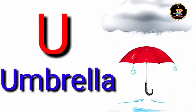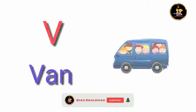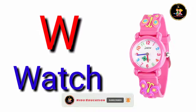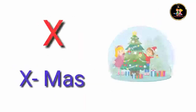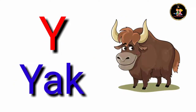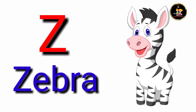U for umbrella, V for violet, W for watch, X for Xmas, Y for yard, Z for zebra.